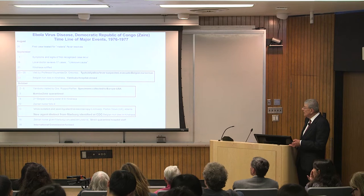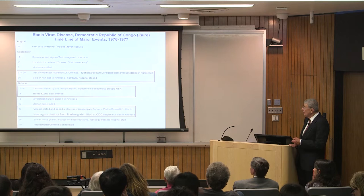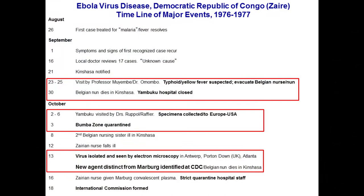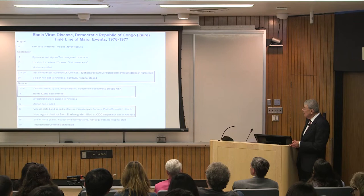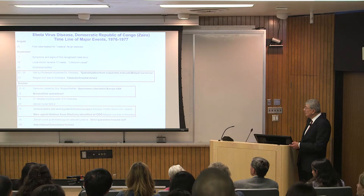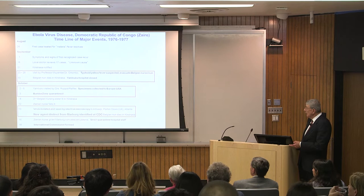Because the epidemic kept going on until the end of the month, they closed the hospital. The remaining nuns — this was a 120-bed hospital run by a Belgian expatriate team — were then visited by a Belgian doctor and a French doctor who collected specimens. These specimens came to the U.S. A second Belgian nursing sister fell ill in Kinshasa, then a Zairean nurse got ill, and the virus was isolated and thought to be Marburg.